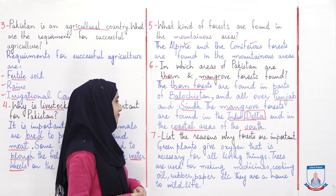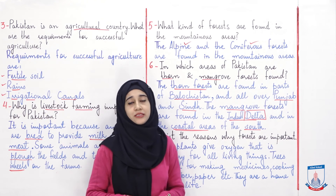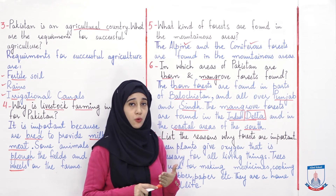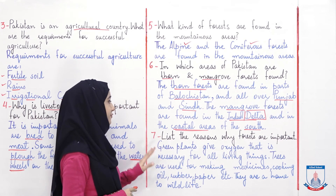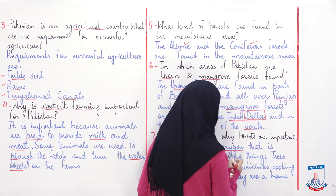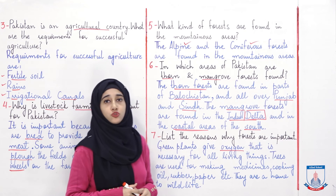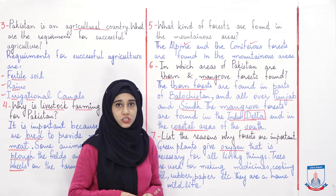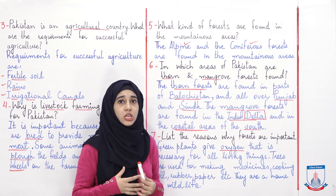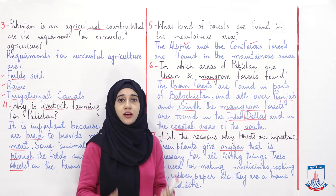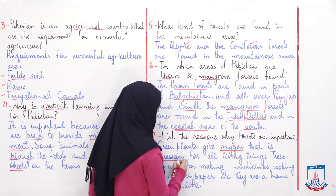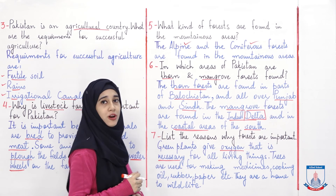The reasons why forests are important — اب وہ آپ سے پوچھ رہا ہے importance کے لیے۔ There could be a whole separate lecture but a few reasons we are going to write here. Green plants give oxygen — یہ تو بچوں آپ کو پتا ہی ہوگا کہ green plants کا سب سے بڑا فائدہ یہ ہے that they give oxygen۔ Oxygen تمام living things کے لیے ضروری ہے because we breathe — we inhale oxygen and exhale carbon dioxide. Green plants give oxygen that is necessary for all living things.